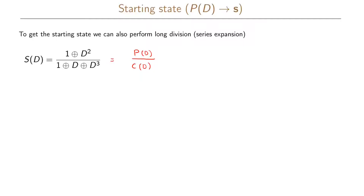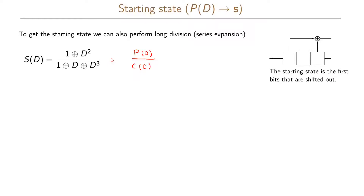We cannot directly determine from the polynomial p(d) — which is here 1 + d² — exactly which starting state we have. So instead, we perform this division. We can do this because the starting state is the first bits shifted out from our shift register. If we perform this division, we find the sequence s, and we can look at the first three bits of s to determine our starting state.